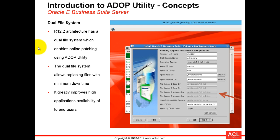Recall that when we installed the release 12.2.0 instance using rapid install, under the application tier setup we specified not just the application user but also the file system details. We gave the file system one base directory, the file system two base directory, and the instance directory for both file systems. These are the run file system and patch file system that operate simultaneously while users are working on the run file system. The dual file system allows replacing files with minimal downtime and improves high application availability to end users.